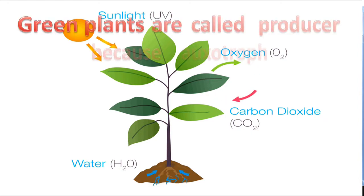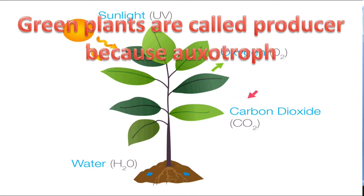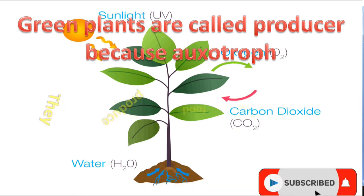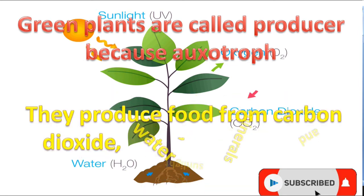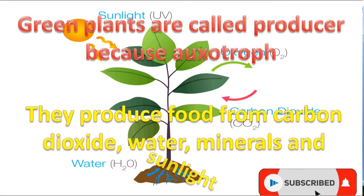Green plants are called producers because they are autotrophs in nutrition. They produce food from carbon dioxide, water, minerals and sunlight by themselves.